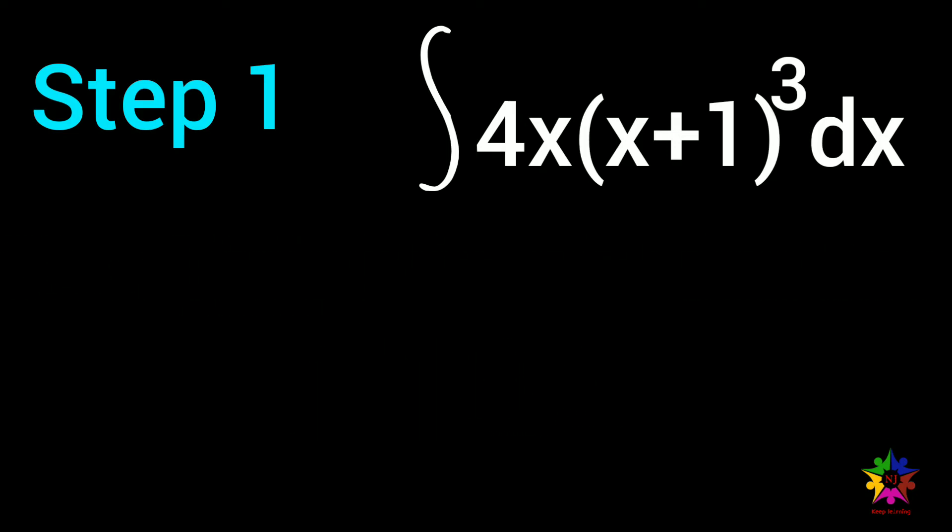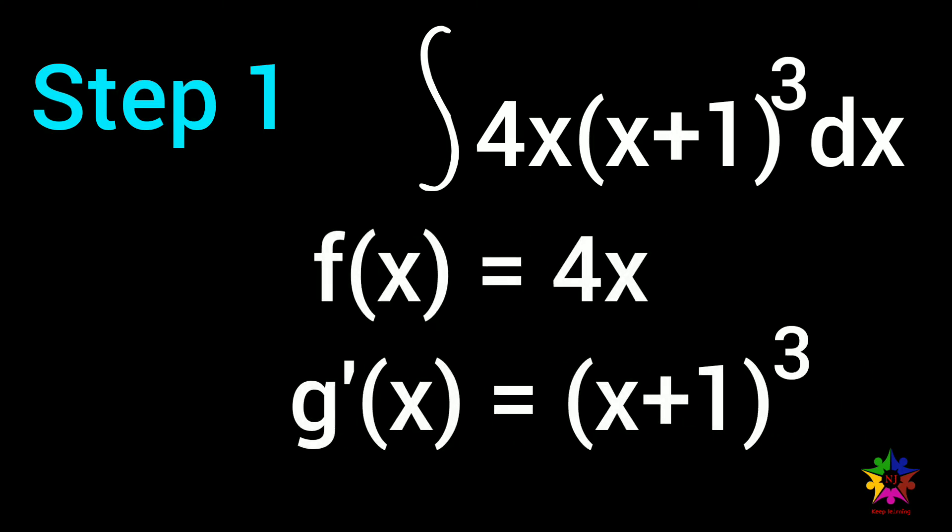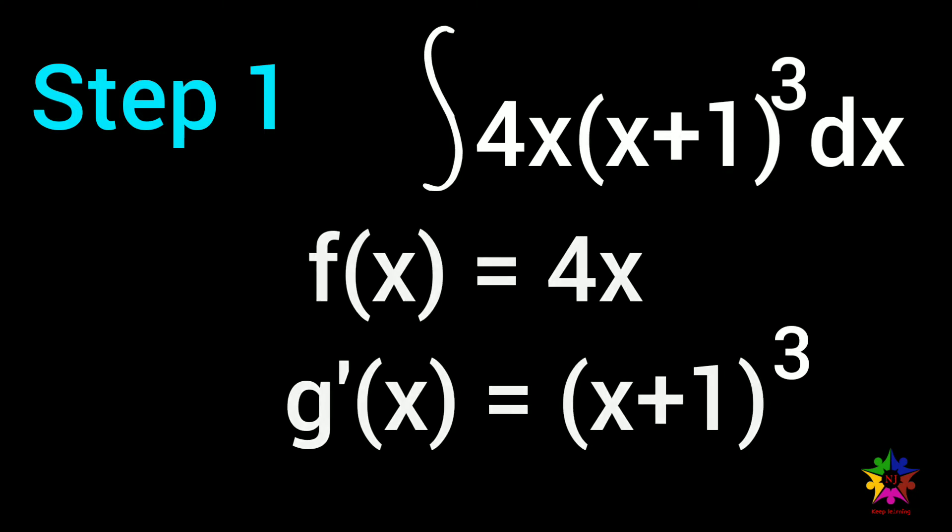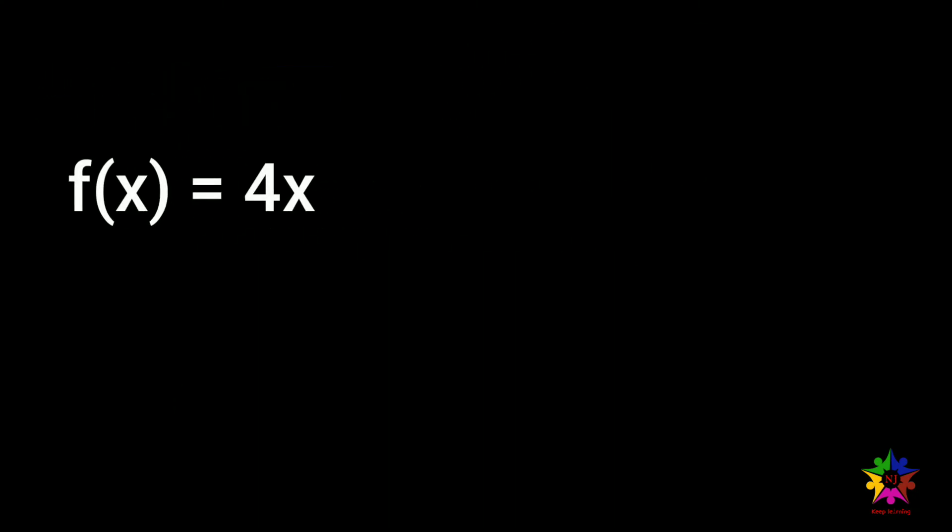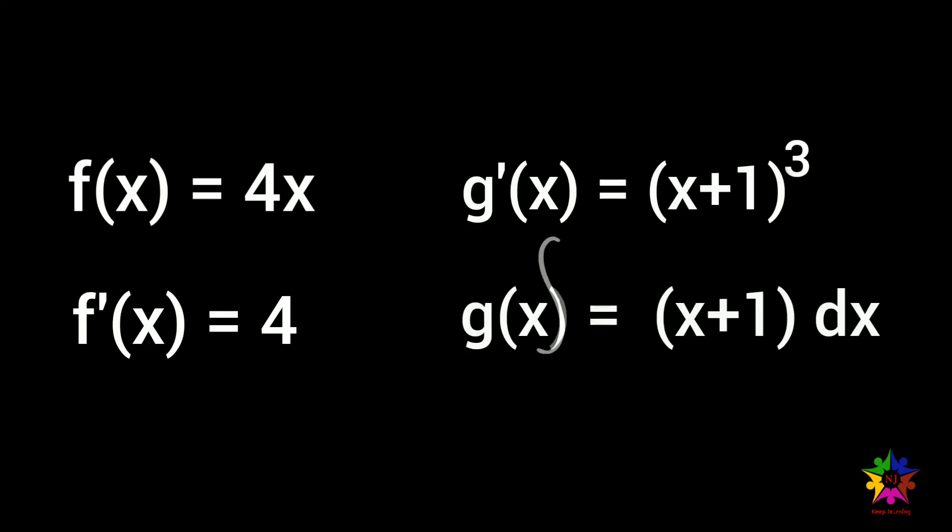By letting f of x is equal to 4x and g dash of x is equal to x plus 1 all cube dx, then f dash of x is equal to 4, and g of x is equal to integral x plus 1 all cube dx, which can be integrated using the simple power rule we have studied.